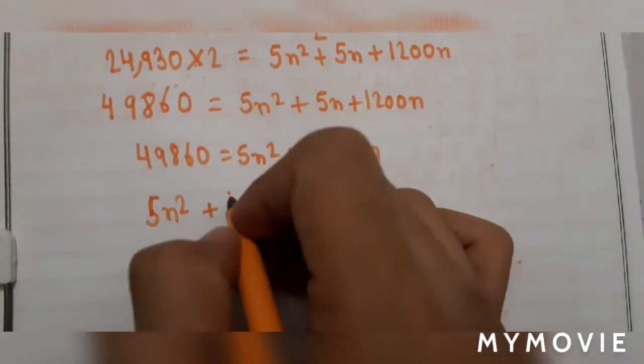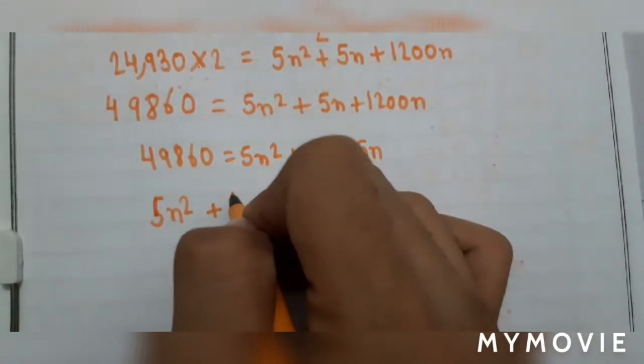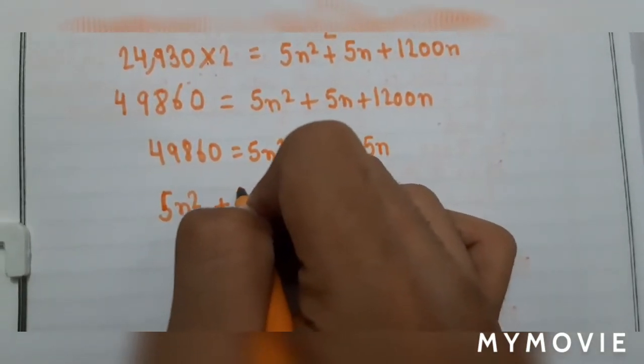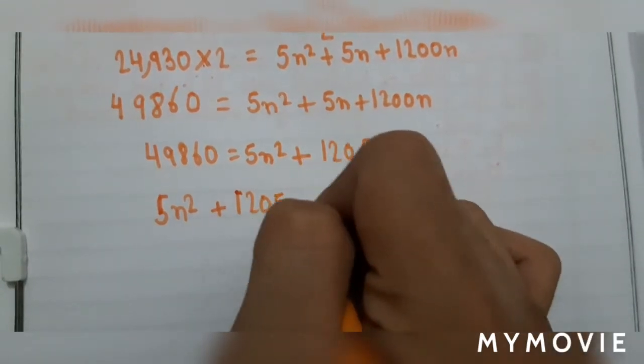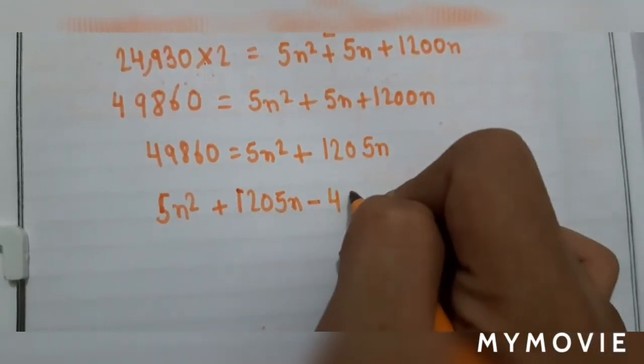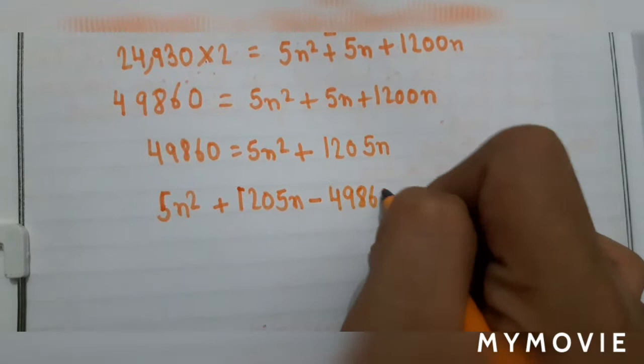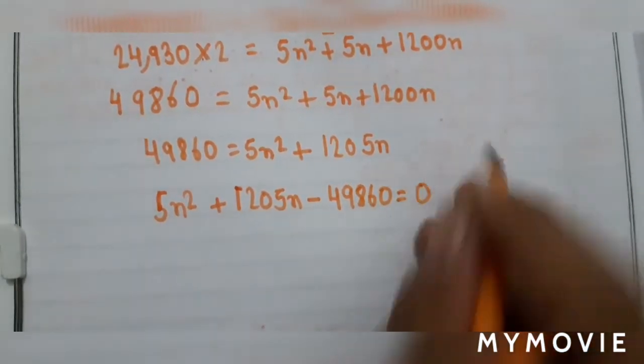Now add 5n and 1200n to get 1205n. So the equation becomes: 5n squared plus 1205n minus 49860 equals 0.